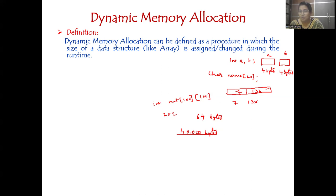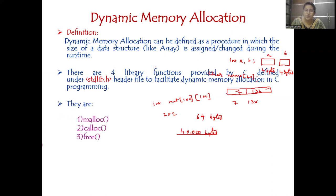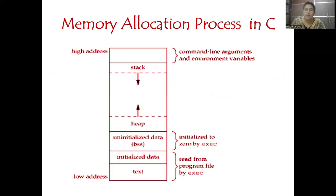I think all of you are aware of memory allocation in C. Just try to recollect, otherwise I will provide you a slide here. For this memory allocation, as I told you, we have four functions under the stdlib.h header file. Can you recollect this memory allocation process in C programming? We discussed this in earlier classes. Whenever you are saving a program, internally the memory will be allocated like this.